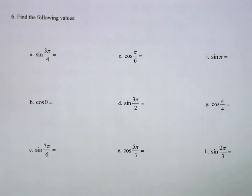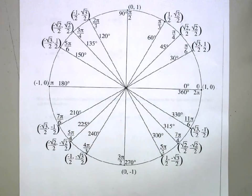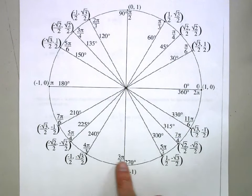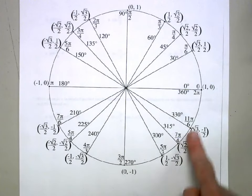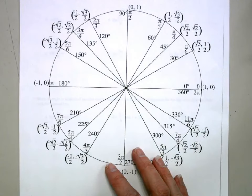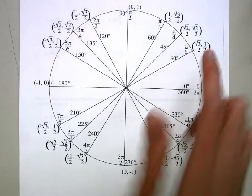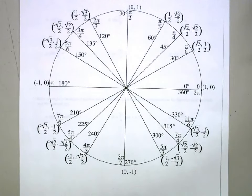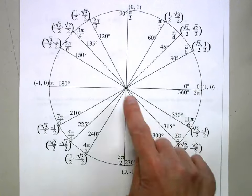We're going to find specific values for sine and cosine using the unit circle. The unit circle gives specific angles with degrees and radians — you're only responsible for radians. The x-value at any point is the cosine and the y-value is the sine. We won't have a unit circle on the AP exam, so we need to know this. The quadrantals are 0, π/2, π, and 3π/2.